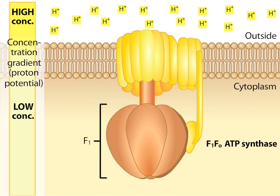F1 protrudes into the cytoplasm, and F0 sits in the membrane. F0 consists of 12 identical subunits designated C. A central stalk called the gamma subunit extends from F0 through F1.